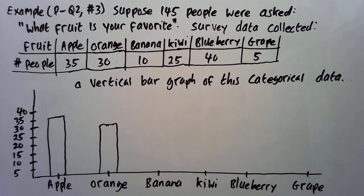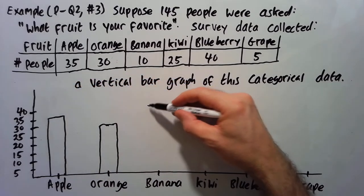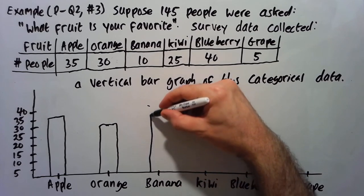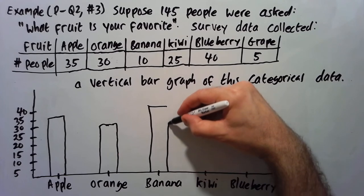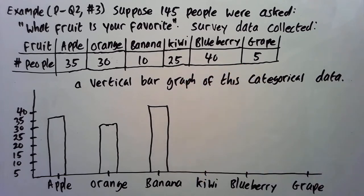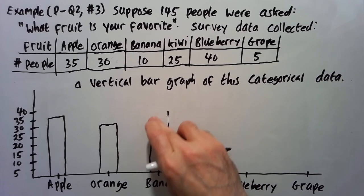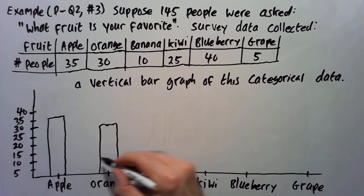So banana then has 40. So that's way up here. Sorry, banana had 10. Sorry, I looked at the wrong one. I was looking at blueberry. So banana's way down here at 10. So it's actually just here.